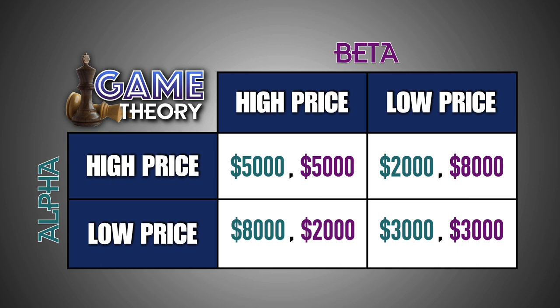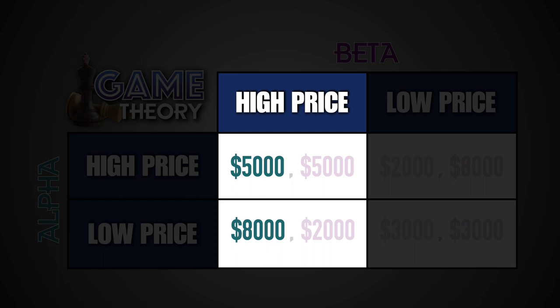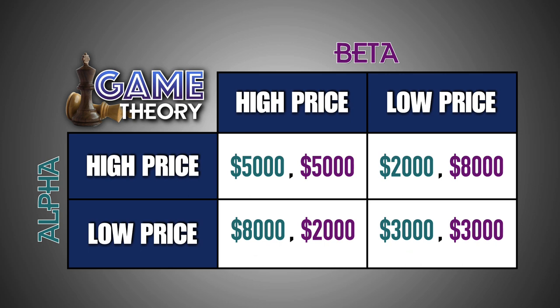Does Alpha have a dominant strategy? Yes. Alpha's dominant strategy is to set its price low, because that strategy will give Alpha a better payoff regardless of Beta's strategy. If Beta follows a high-priced strategy, Alpha's better strategy is to set its price low, because it will earn $8,000 in profit, as opposed to the $5,000 in profit it would have earned had it decided to set a higher price. Even if Beta were to also set a low price, Alpha's better strategy is still to set its price low, because it will earn $3,000 in profit, as opposed to the $2,000 in profit it would have earned had it decided to set a higher price. As a result, because Alpha will earn greater economic profits by setting a lower price regardless of what Beta decides to do, Alpha's dominant strategy is to set a low market price and will therefore charge consumers less.